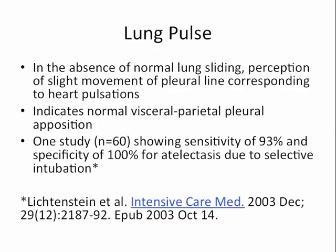Another sign that can help you assess a patient with loss of lung sliding is the lung pulse. The original study found it had a sensitivity of 93% and a specificity of 100% for selective intubation causing atelectasis. With this sign, you see no lung sliding with respiratory movement, but instead a slight shimmer that corresponds with heart pulsations, indicating a healthy visceral-parietal pleural interface. The lung is not moving with respiratory movement — you're just getting transmitted heart pulses causing slight movement of the pleura.